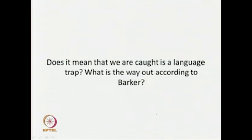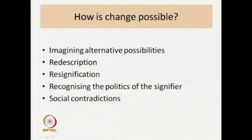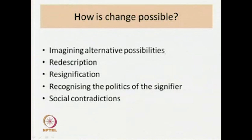What does it mean to be caught in a language trap, and what is the way out according to Barker? Language delimits — it sets the limits through which we articulate things. Yet we are not always trapped: imagining alternative possibilities, re-description, re-signification, understanding that the signifier is not a neutral or innocent thing but full of power and politics, and acknowledging that there will always be social contradictions — these are the ways in which it is possible to escape the language trap.